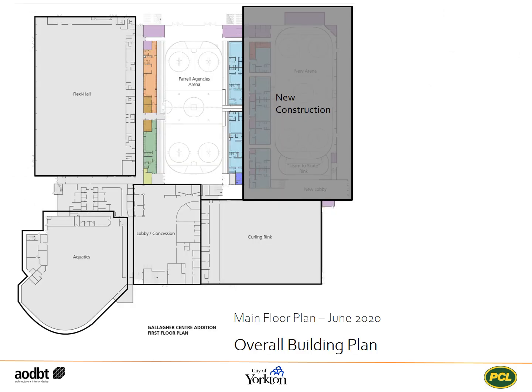This initial concept formed the basis of the current schematic plan. Not unlike the conceptual plan presented in 2019, the new construction is slated to occur east of the Farrell Agencies arena and north of the curling rink. This proposed Gallagher Centre plan highlights the simplicity of user flow through the building, despite the many amenities co-located under this single roof.